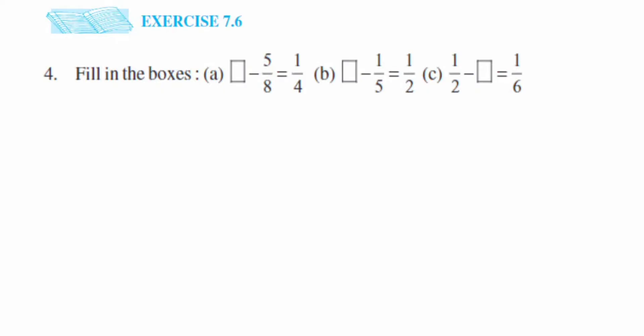Hey everyone, here I am doing NCERT XI 7.6, fourth question. This is from Class 6 fraction chapter. The question is fill in the boxes — we have three questions to solve. The first one is: dash minus 5 upon 8 is equal to 1 upon 4, so we have to find out the blank.